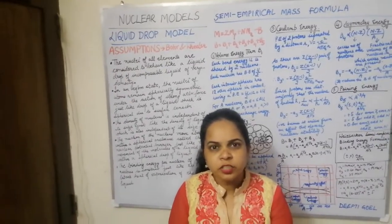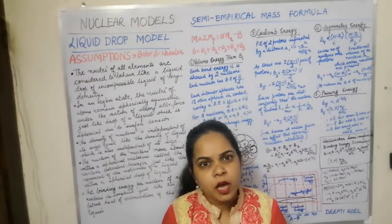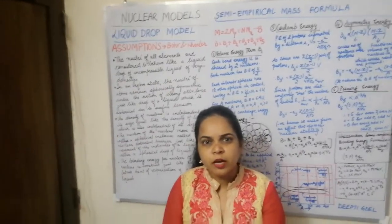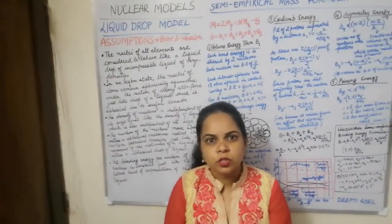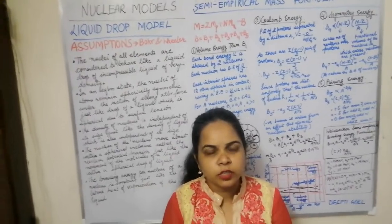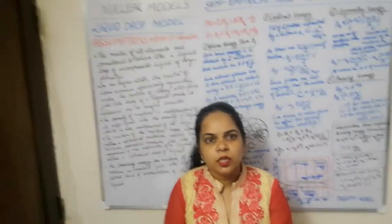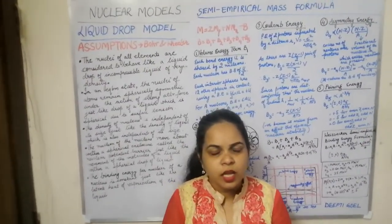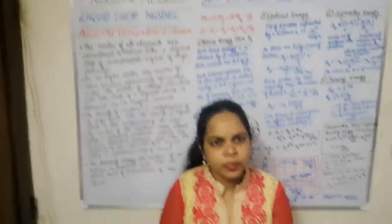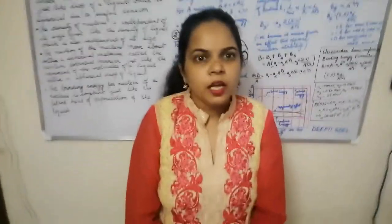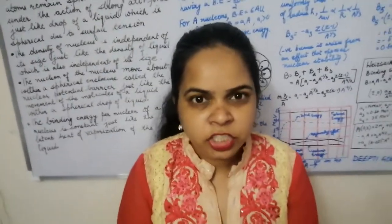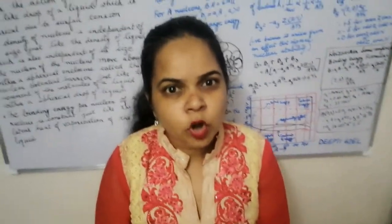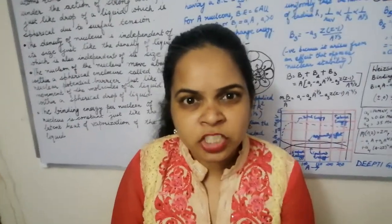Many questions could be answered only by some models. The models proposed to explain the properties of the nucleus were: the degenerate gas model, collective model, alpha particle model, optical model, liquid drop model, and the shell model. The most important were the liquid drop model and the shell model.